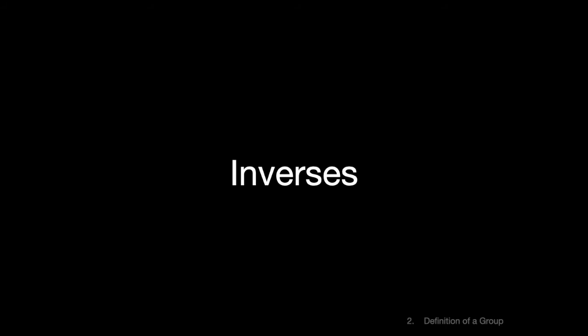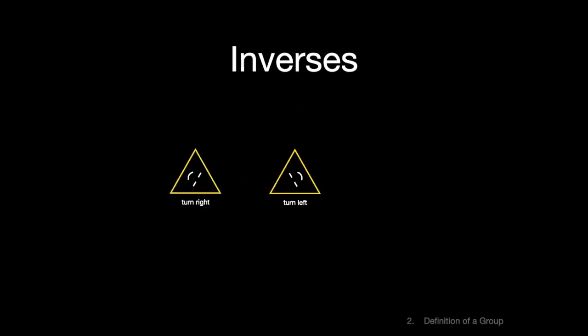Next, the undo action, also known as the inverse. We saw this when we composed certain symmetries of our triangle. Turn right and turn left are each other's inverses. Doing them both in succession accomplishes nothing. Another way of saying this is that two elements are each other's inverses if their product is the identity. The product of any flip with itself is the identity, so each flip is its own inverse. And the identity is its own inverse, since the product of the identity and the identity is the identity.